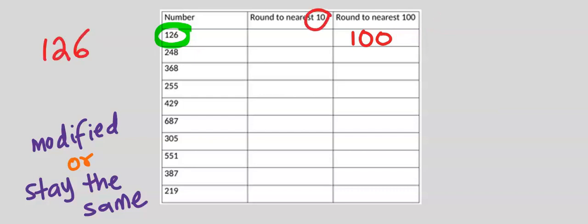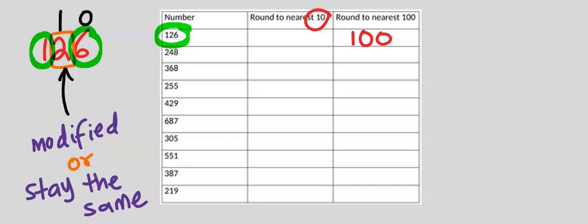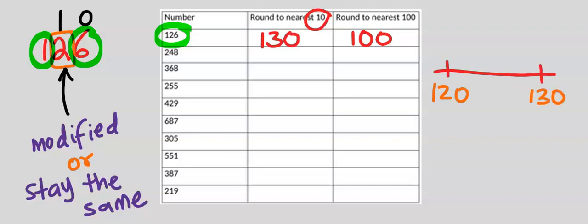For the nearest ten, we have zero, one — which is the tens place — so two will either be modified or stays the same. But six is up to five, so one will remain the same and the two will become three; the six is now zero. Hence, the nearest ten of 126 is 130. Halfway between 120 and 130 is 125, and 126 is closer to 130.